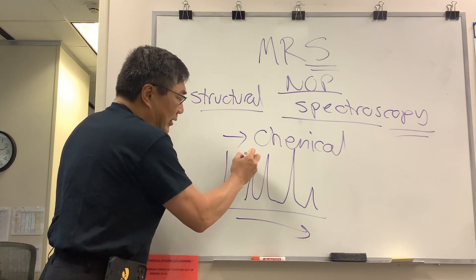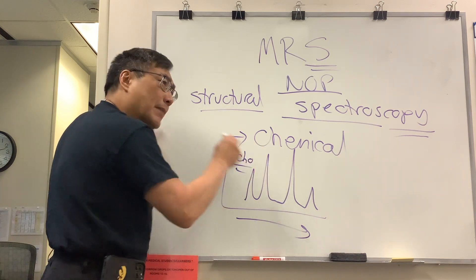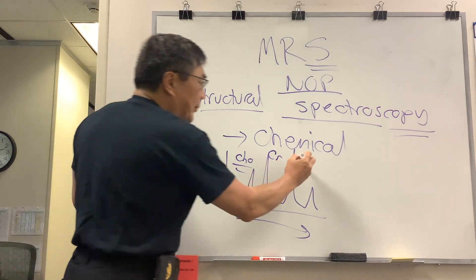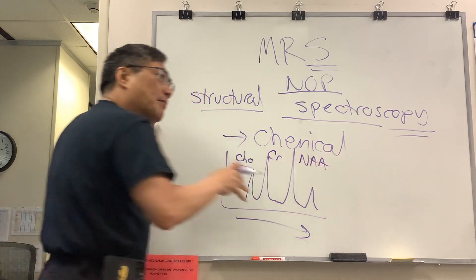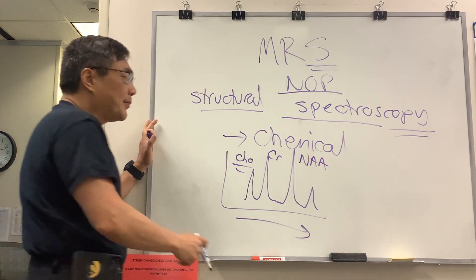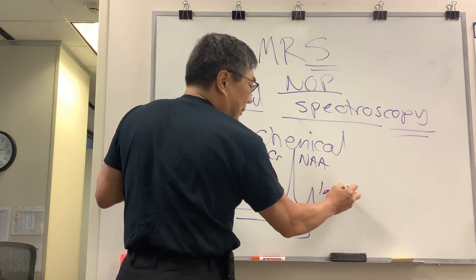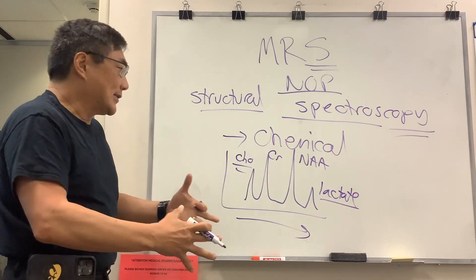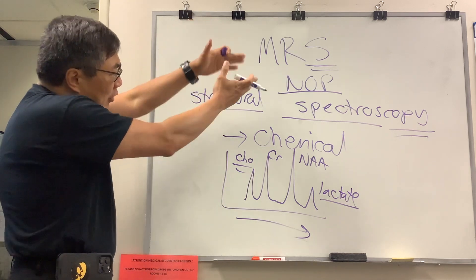The typical things we're going to be looking at is choline, which is a membrane component, creatinine, which is kind of a measure of metabolism, the NAA, which is a measure of neurons, and then you might have a lactate peak, which is for anaerobic metabolism from lactic acidosis.